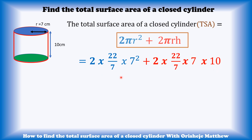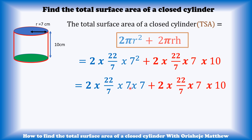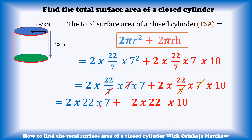Let's find the circular surface area. We have 7 squared, which is 7 times 7. There is a 7 in the denominator and a 7 in the numerator, so they cancel out, giving us 2 times 22 times 7. The same cancellation applies to the second term, giving 2 times 22 times 10. Multiplying out: 2 times 22 times 7 gives 308, and 2 times 22 times 10 gives 440. Adding them together gives the total surface area.